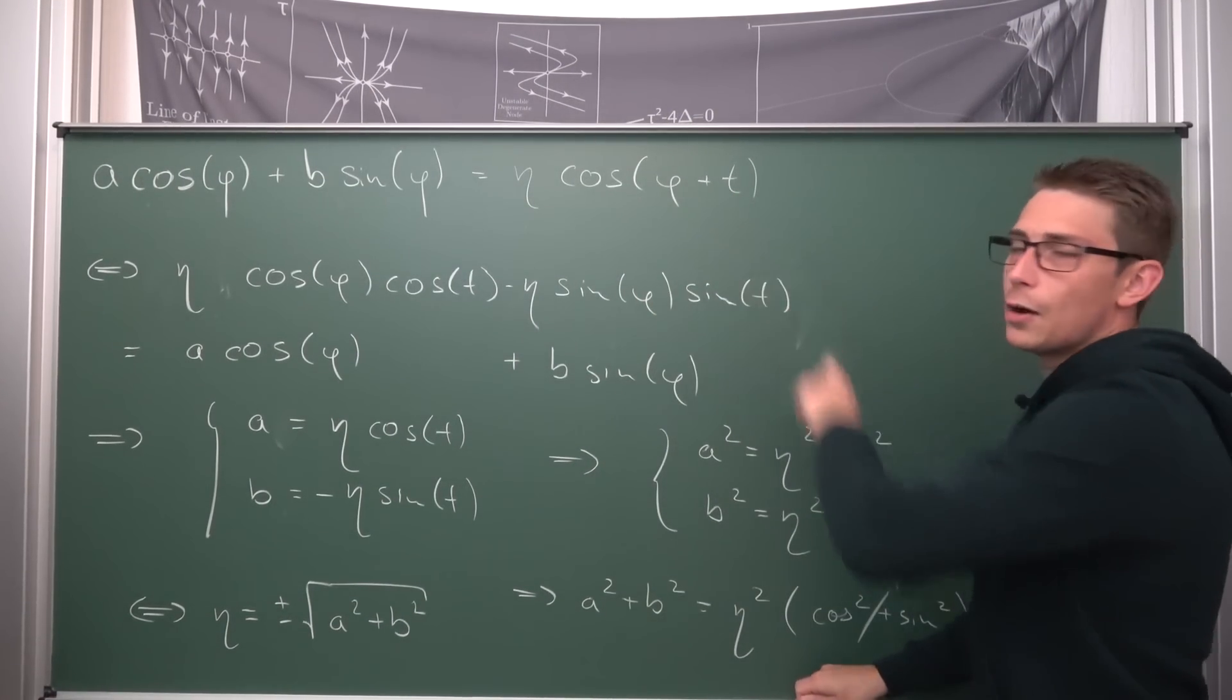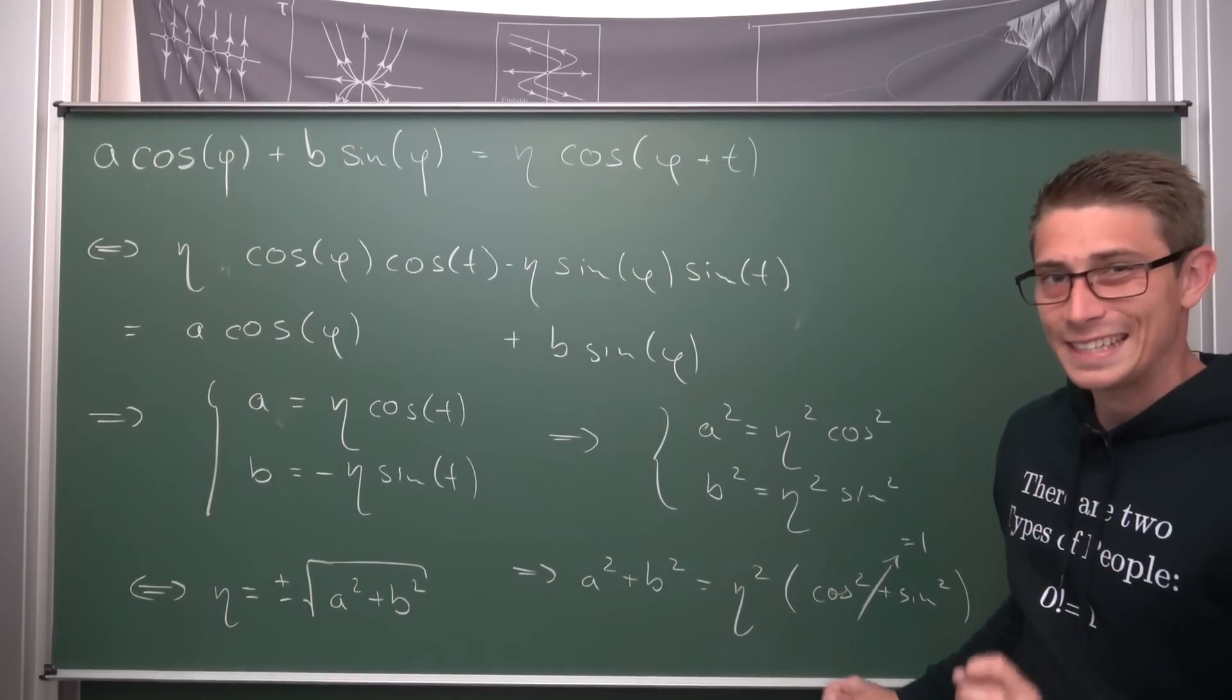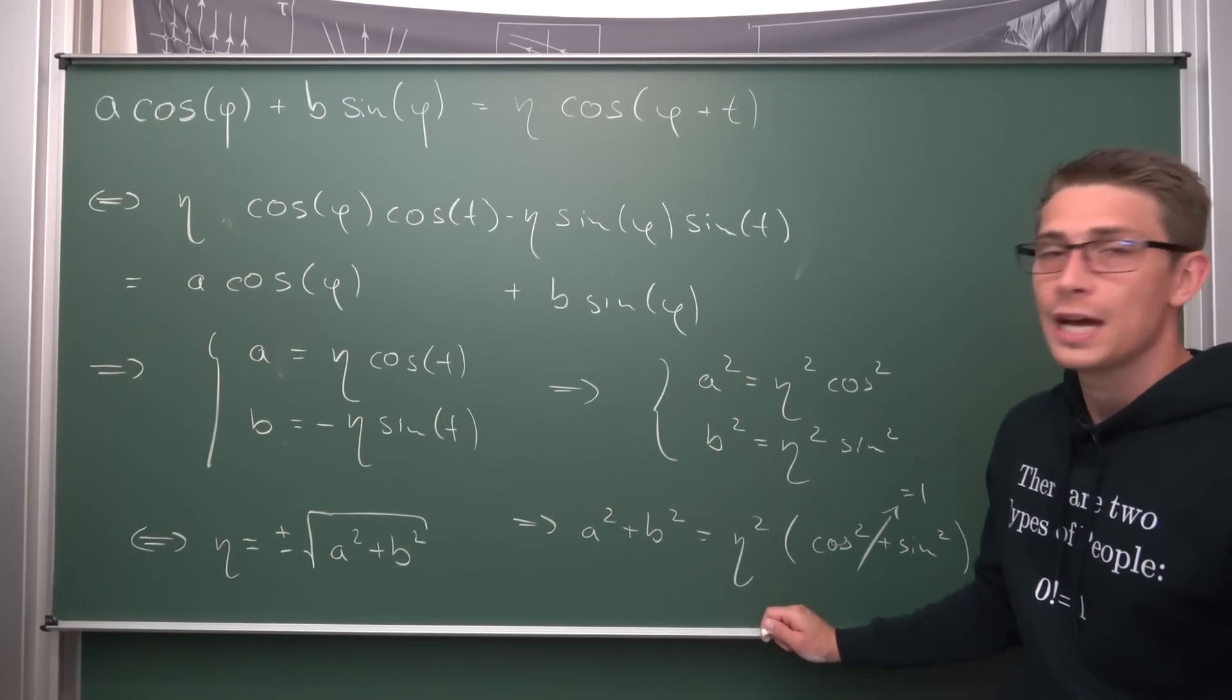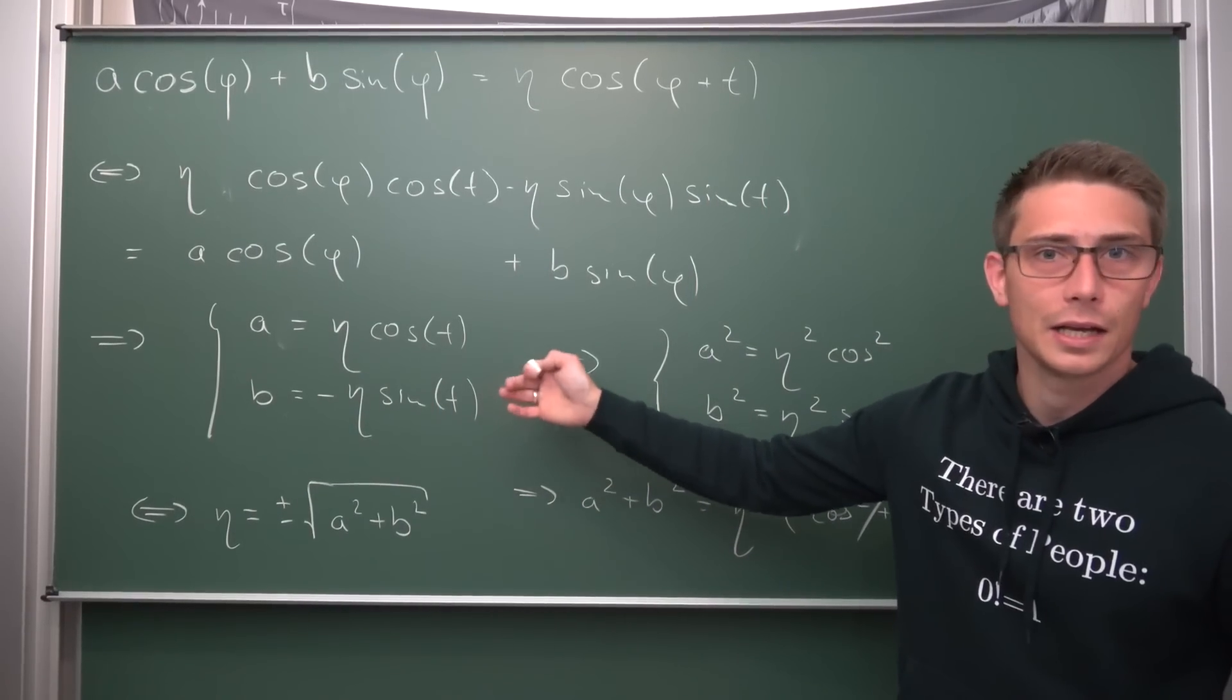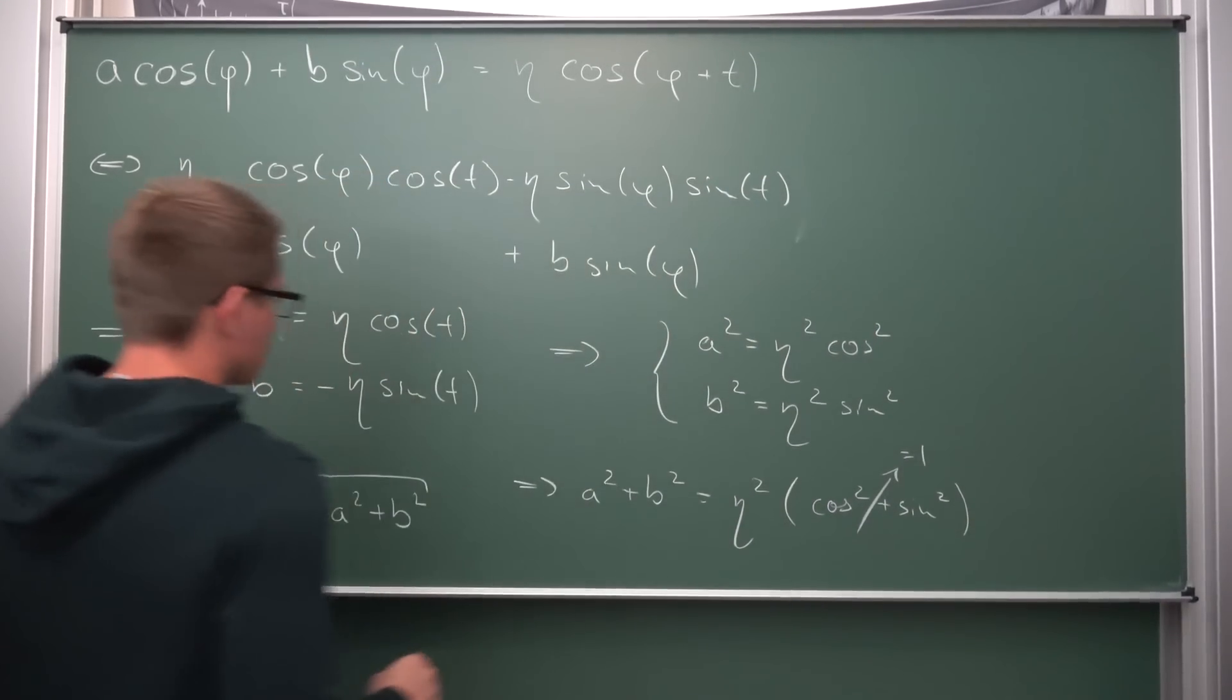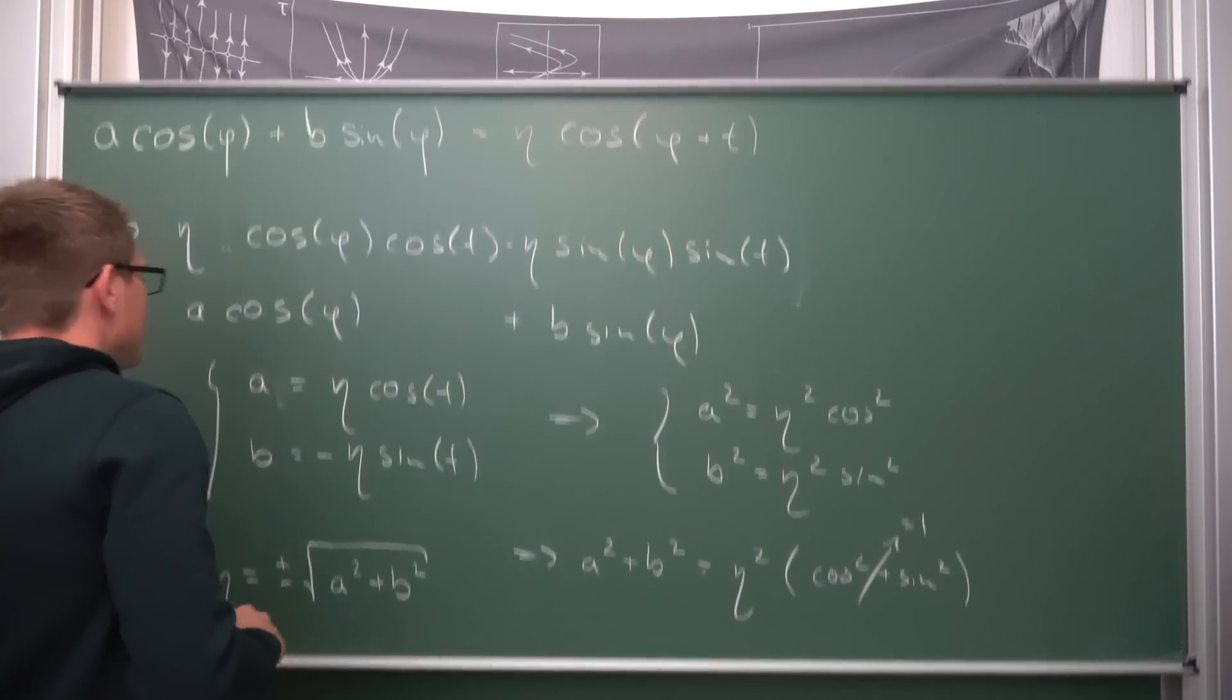So we got what our eta is. But we got one other unknown in our equation. Namely, we get the t. How can we extract our t from this system of equations? Well, what we are going to do is we are going to divide both equations by one another. Doesn't really matter in which way you do it. You can either get the cotangent out or you get the tangent out. What we are going to do is divide the second equation by the first equation.